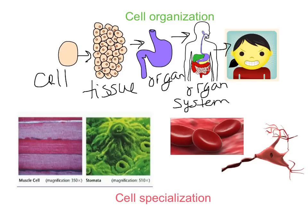A group of organs that work together gives you your organ system, and a group of systems — like digestive with respiratory and circulatory — results in the organism. Not everything has to go all the way to the top of the hierarchy. Bacterial cells don't go past the cellular level because they're unicellular organisms, and fungus cells may not be grouped beyond tissues or organs. But animals and most plants go through all of these cell organizational levels.